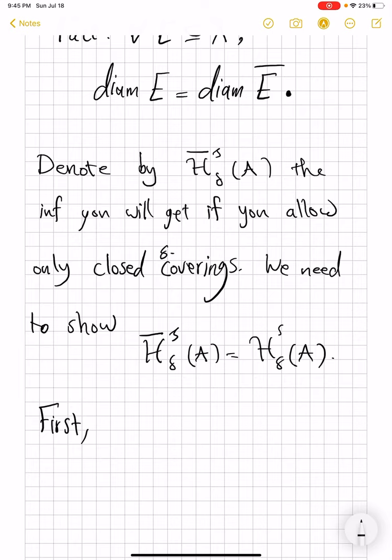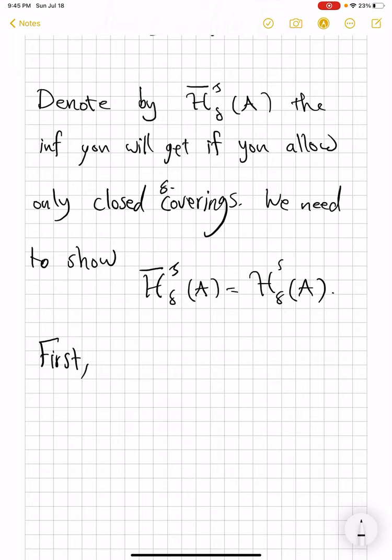First, let's see which one of these is bigger. When you insist on covering by only closed sets, then you allow a smaller collection of coverings. Therefore you're taking infimum over less allowable coverings, and therefore that infimum may potentially be larger. So simply by definition, this is bigger than or equal to H^s_δ of A.